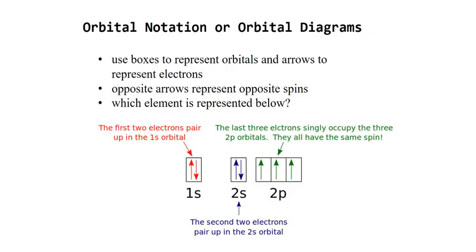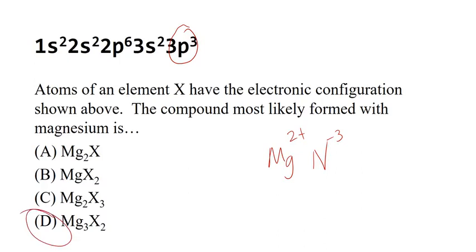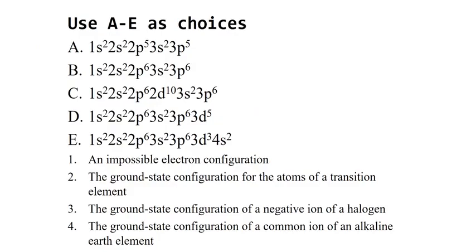For orbital notations and diagrams — atoms of element X have a given electron configuration ending in 3P3. The compound most likely formed with magnesium: if something ends with 3P3, that group is in the same group as nitrogen, so it's likely to have a charge of negative 3. Magnesium has 2+, so we would expect that compound configuration. When identifying which electron configuration is impossible, look for what seems odd — here we see 2D, which is impossible since the D subshell doesn't exist at energy level 2.